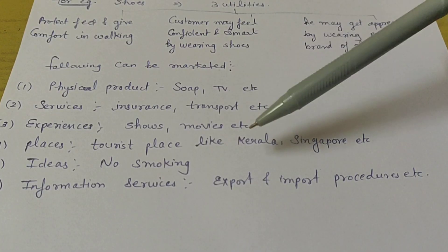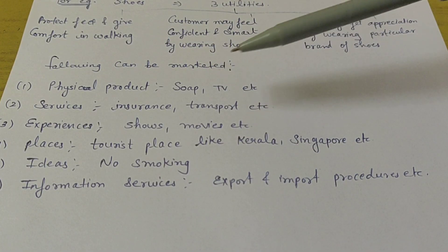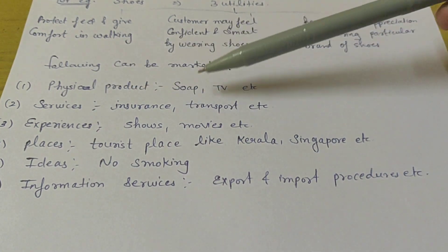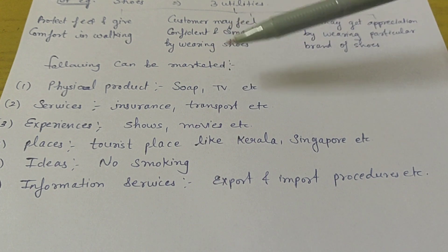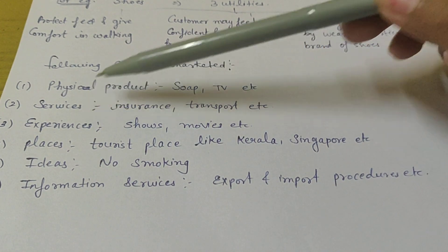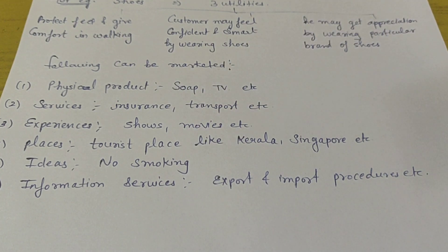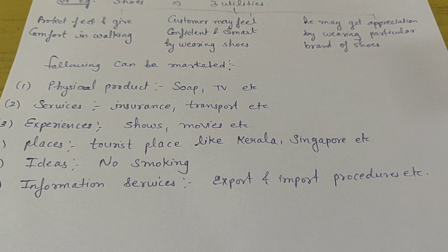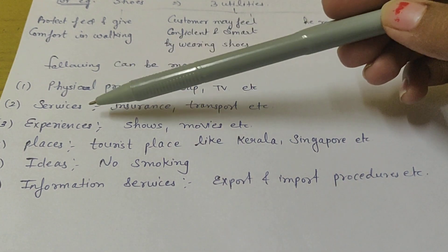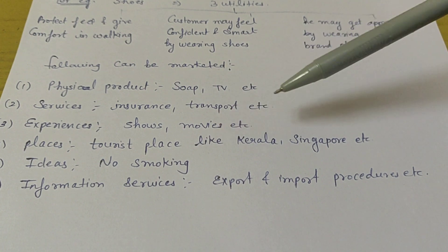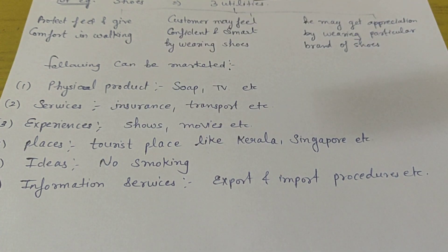Now the main answer: what can be marketed? The following can be marketed. First is physical products — TV, bed, sofa and all. Second is services, like insurance or transport — things we cannot touch or feel, like banking services. Third is experiences — shows, movies, etc. You can go to theatres. This is an experience that you can market.